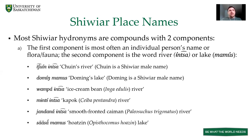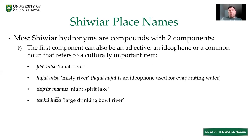The first component can also be an adjective, an idiophone, or a common noun referring to a culturally important item. Examples include Shytianza for 'small river,' Huyuyinza for 'misty river' — where Huyuyi is an idiophone meaning evaporating water — Titipiurmamus meaning 'the lake of the night spirit,' and Tangunza meaning 'the river of the large drinking bowls,' an important cultural item. This river is called that because the community found a large pile of old drinking bowls left there by people in the past.